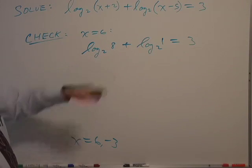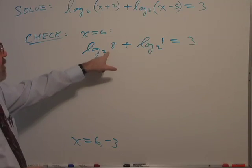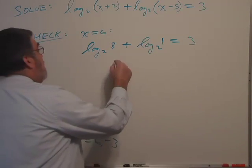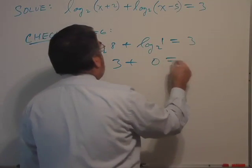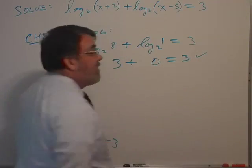Log of 8 base 2, well that would be 3 because 2 to the third power equals 8. Log of 1 in any base, if you recall, is going to be 0. So 3 plus 0 equals 3. That's a good solution.